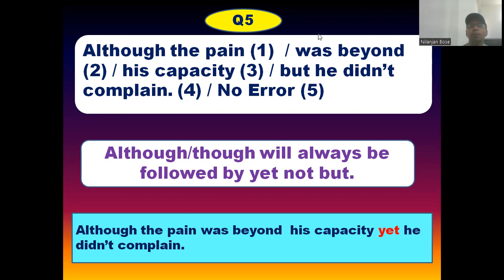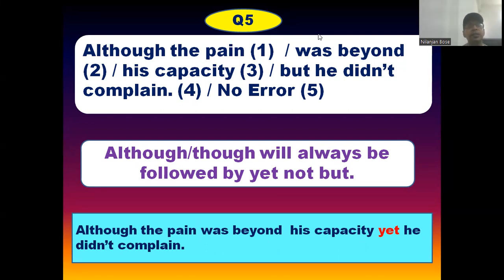Here comes the last question: 'Although the pain was beyond his capacity, but he didn't complain.' Before moving through the question, the rule is: if a sentence starts with 'although,' it will always be followed by 'yet,' not 'but.' In most competitive examinations, I have found questions where the sentence consists of 'although' but is followed by 'but' — it cannot be followed by 'but,' it should always be followed by 'yet.' In this question, 'but he did not complain' is wrong. 'But' should be replaced by 'yet.' The correct answer will be: although the pain was beyond his capacity, yet he did not complain.